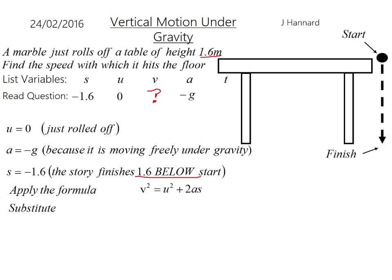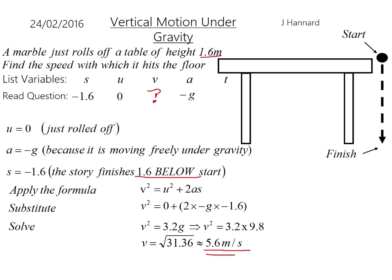So substitute your numbers in, just literally drop them in for where you see them. Get v squared equals 0 plus 2 times minus g times minus 1.6. And there you can see, the double negative will come into play, and you'll end up with v squared equals 3.2g. Which means that it's v squared equals 3.2 times 9.8. So v equals the root of 31.36, which is approximately equal to 5.6 meters per second. So that is the speed with which this marble will hit the floor.